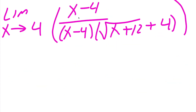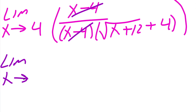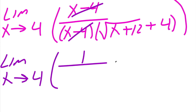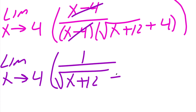We notice that the numerator and denominator both contain an x minus 4, so we can cancel it. What we have left is the limit of x approaching 4 of 1 divided by the square root of x plus 12 plus 4. Now we can try plugging in 4 here to see what happens.